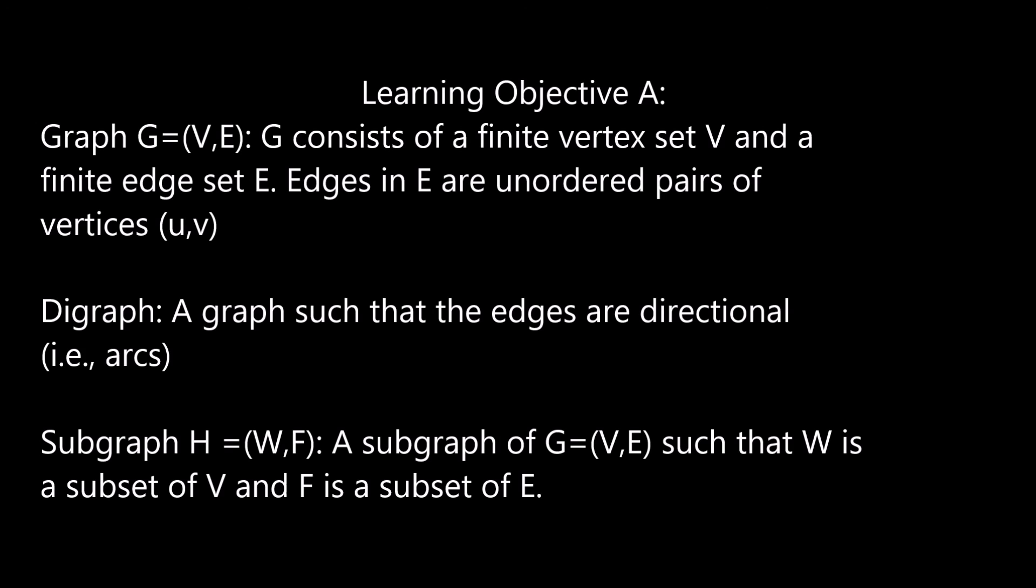In conclusion, that covers learning objective A, which have the definitions of graph, digraph, and subgraph. A graph G consists of a finite vertex set V and a finite edge set E. The edges in E are unordered pairs of vertices, usually written U,V. A digraph is a graph such that the edges are directional. In other words, arcs. And finally, H is a subgraph of G if the vertices of H are a subset of the vertices of G, and similarly, the edge set of H is a subset of the edge set of G.